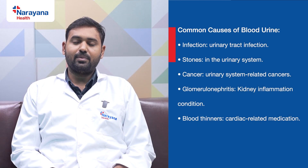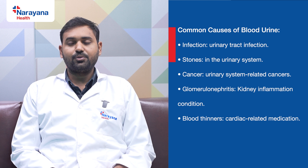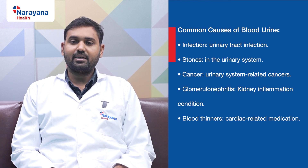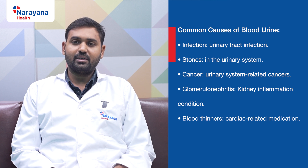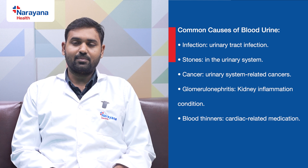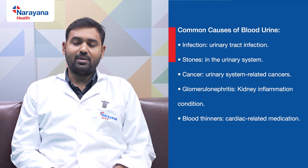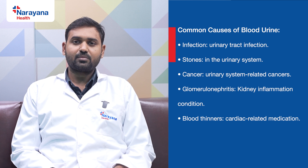The most common causes of blood in urine can be due to infection — which in technical terms we call urinary tract infection — or it can be a symptom of a stone in the urinary system, or it can be a cancer in the urinary system. There can also be other causes like glomerulonephritis, also called nephrotic syndrome, or it can be due to blood thinners used for cardiac problems.